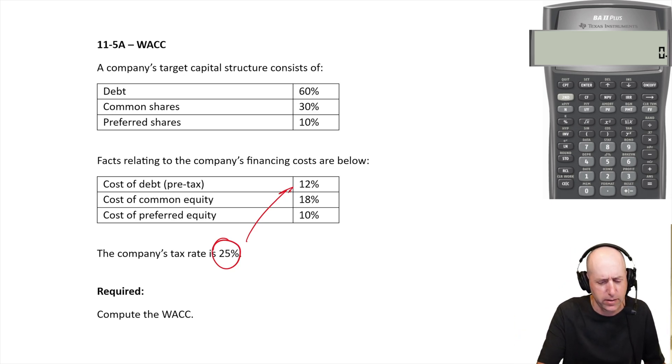What's our after-tax cost of debt? We multiply that by one minus the tax rate, so I'm going to multiply that by 75%. 12 times 0.75 is 9%.